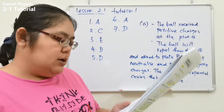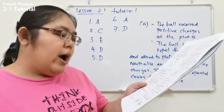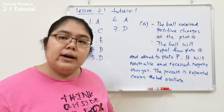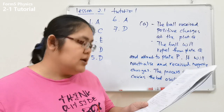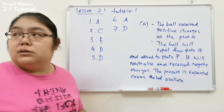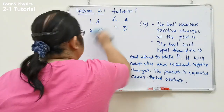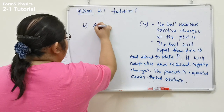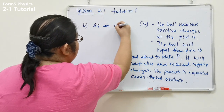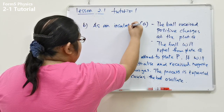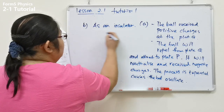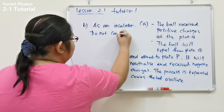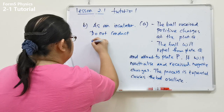Part B: why is the nylon thread used? The answer is: nylon is used as an insulator — it does not conduct electricity.